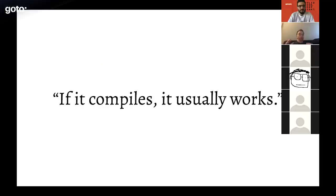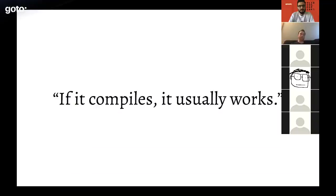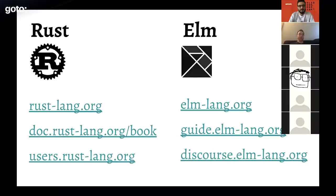Putting these two together: people commonly say when using either language that 'if it compiles, it usually works.' That's very true for Elm in my experience, and often true with Rust — especially during refactors. If I refactor my Elm code and it compiles again, I expect it to work. This is something the next generation of programming languages will make table stakes. To learn more: rustlang.org or elmlang.org, with free books at doc.rustlang.org/book and guide.elmlang.org, and forums at users.rustlang.org or discourse.elmlang.org.